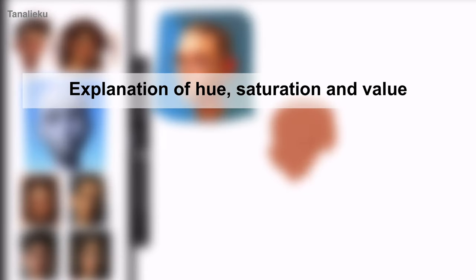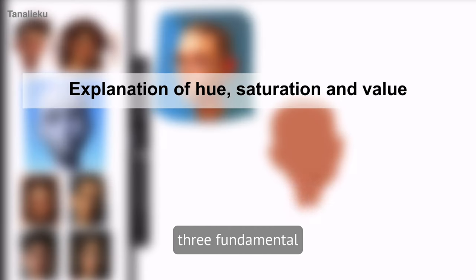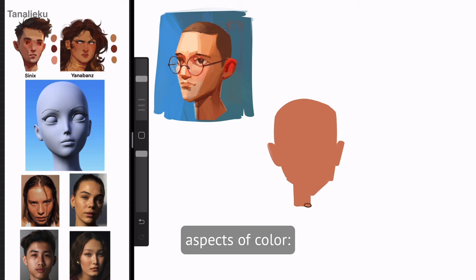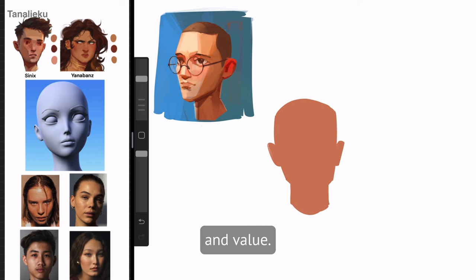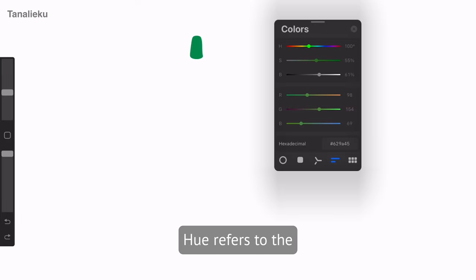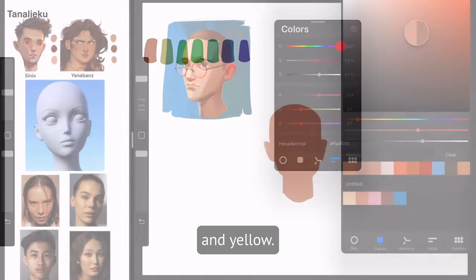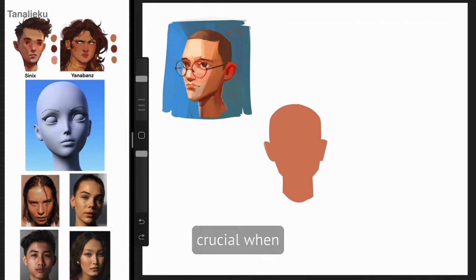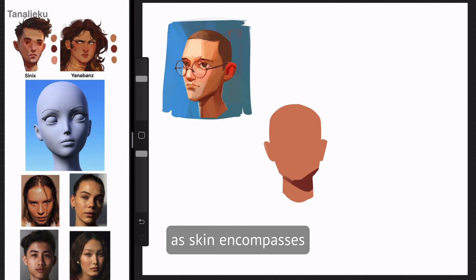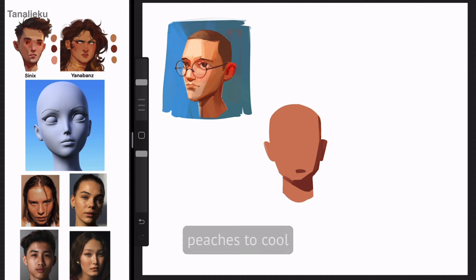Let's discuss the three fundamental aspects of color: hue, saturation, and value. Hue refers to the basic colors like red, blue, and yellow. Understanding hue is crucial when painting skin tones, as skin encompasses a wide range of shades from warm peaches to cool olives.